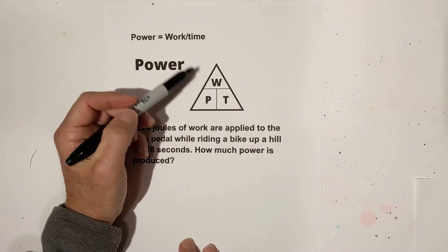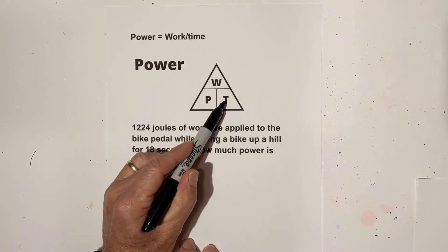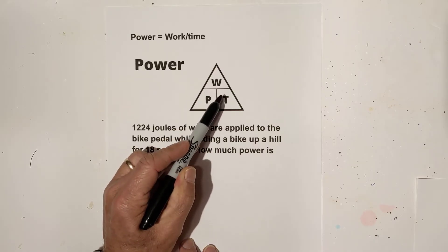The formula for power is work divided by time. You can use this triangle to help you figure out other things like power, time, and work. For example, if you need power, it's work divided by time.